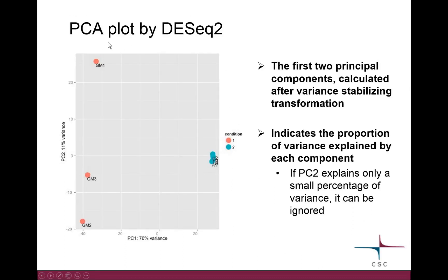Then there's the principal component analysis plot, which is a bit similar to the MDS plot but the mathematics behind are different, so it's showing slightly different things. With PCA, we use the DESeq2 tool under the ChIPseeker tool. We always plot the first two principal components, which are calculated after the variance stabilizing transformation. On the x-axis you can see principal component 1, and on the y-axis principal component 2. They indicate the proportion of variance explained by each component.